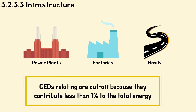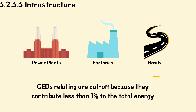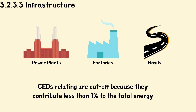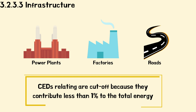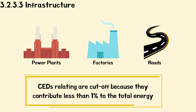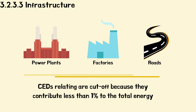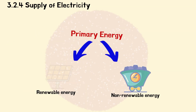Infrastructure: the inclusion of the construction of plants, infrastructure and capital goods with energy-intensive goods and processes is not uniformly handled in life cycle assessment. Usually, the cumulative energy demands relating to construction of power plants, factories and roads are cut off because they contribute less than 1% to the total energy.